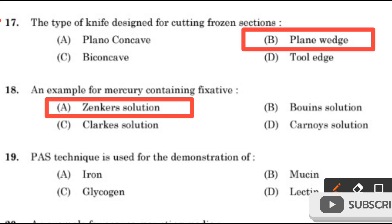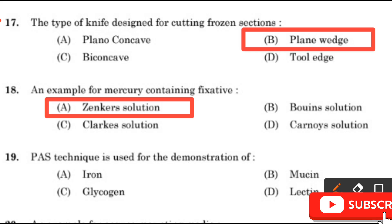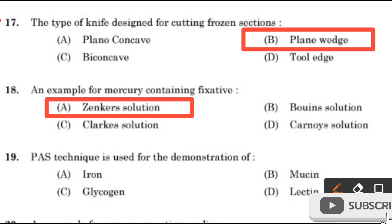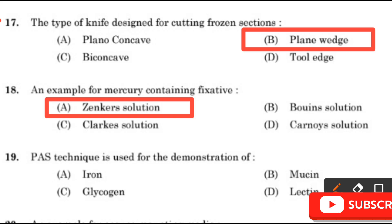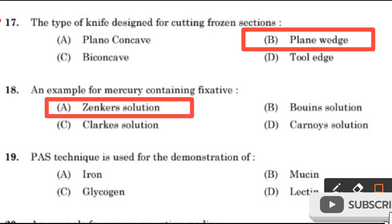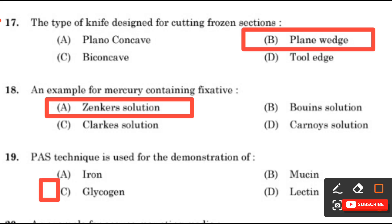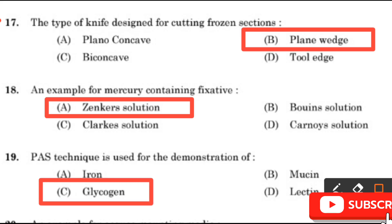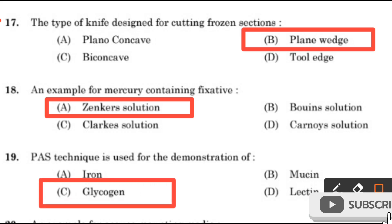Question number 19: PAS technique is used for the demonstration of — Iron, Mucin, Glycogen, or Lectin? PAS technique is used for the demonstration of glycogen.